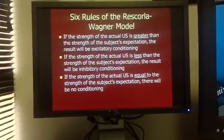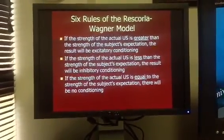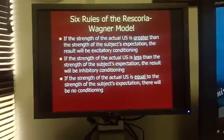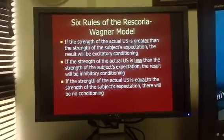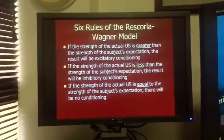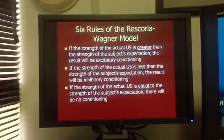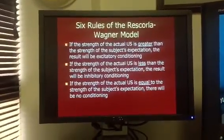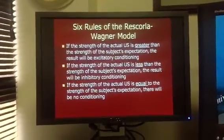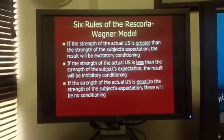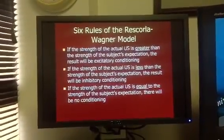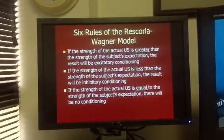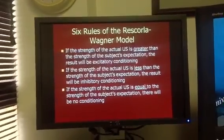Rule number one: if the strength of the actual unconditioned stimulus is greater than the strength of what the subject was expecting, the result will be excitatory conditioning. For example, if the child has never had a shot before and it hurts far worse than expected, excitatory conditioning occurs — a strong pairing between the shot and the conditioned stimulus — causing the child to be scared of the person in scrubs.